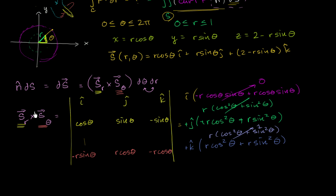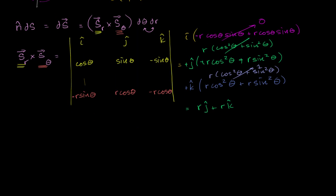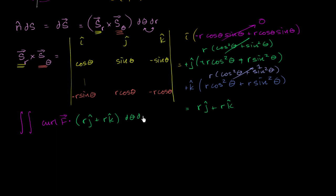So the entire cross product simplifies quite nicely to r times the j unit vector plus r times the k unit vector. We can now write our original surface integral as a double integral over the parameter domain: the double integral of the curl of f dotted with rj plus rk, times d theta dr, where theta goes from 0 to 2 pi and r goes from 0 to 1. We may want to switch the order of integration, in which case we'd swap both the differentials and the bounds.